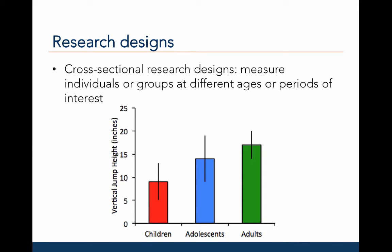In cross-sectional design studies, we are interested in measuring individuals or groups at different ages or periods of interest. Here are some data based on the Branta study, in which groups of individuals are measured once based on their age. We can see differences in vertical jump height across three groups. However, since these data were not collected from the same individuals across time, we can only conclude that there is an age-related difference in vertical jump height between children, adolescents, and adults. We do not observe change; we can only infer it based on differences across these three groups.